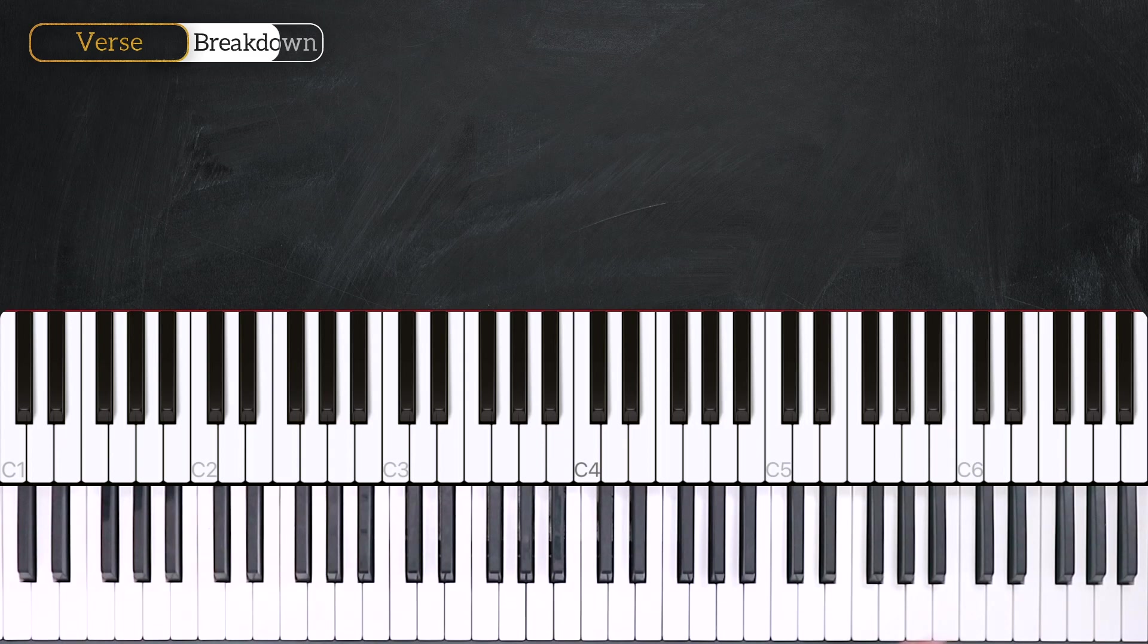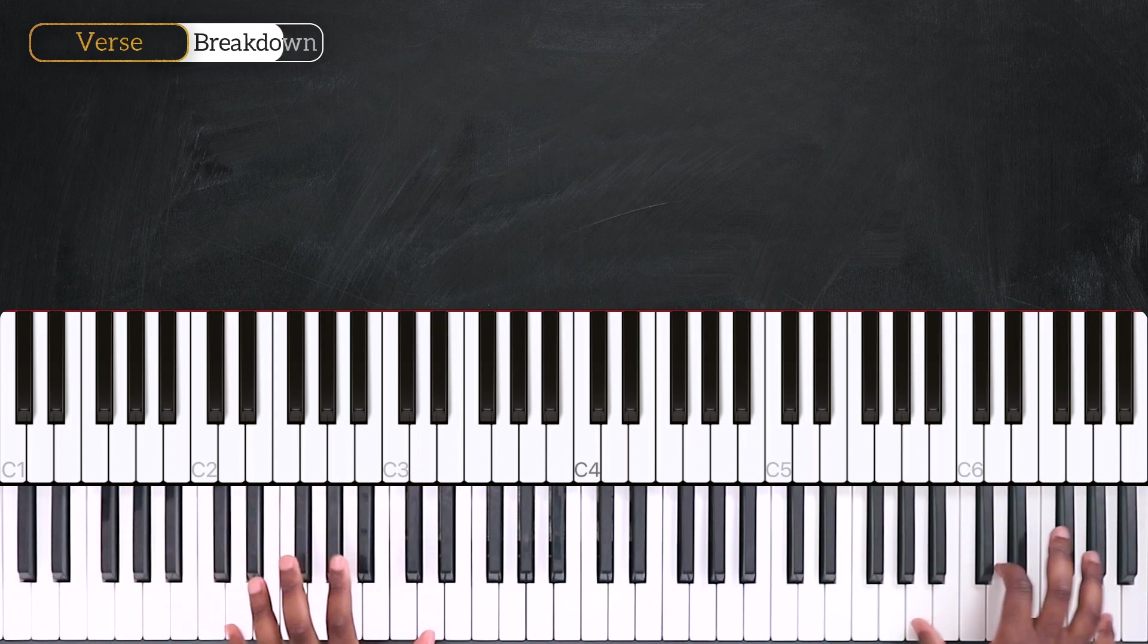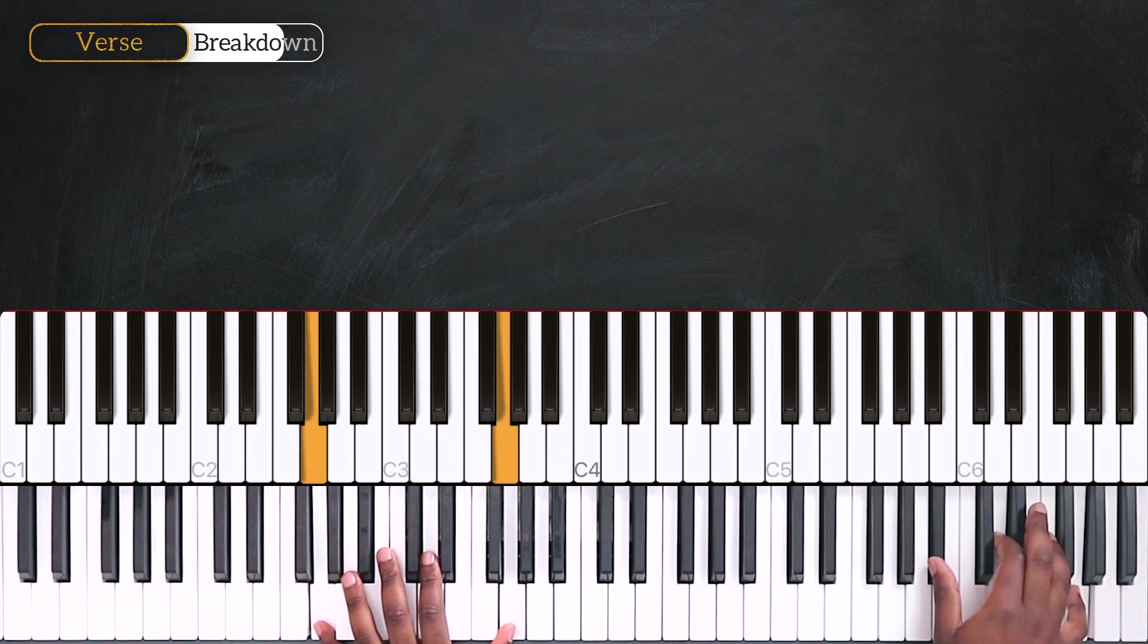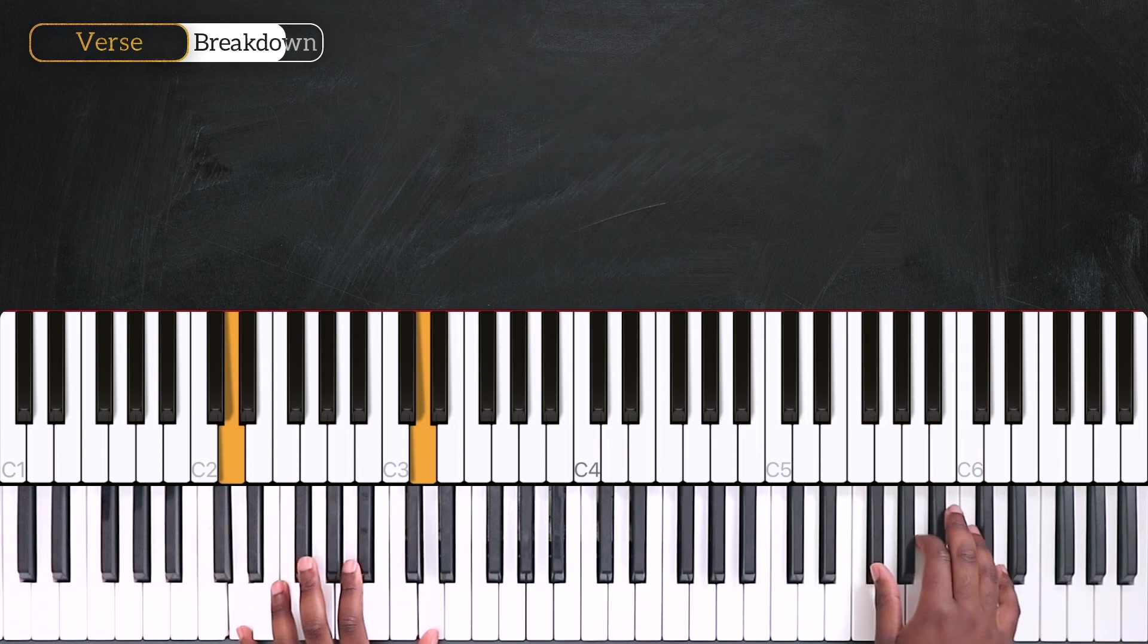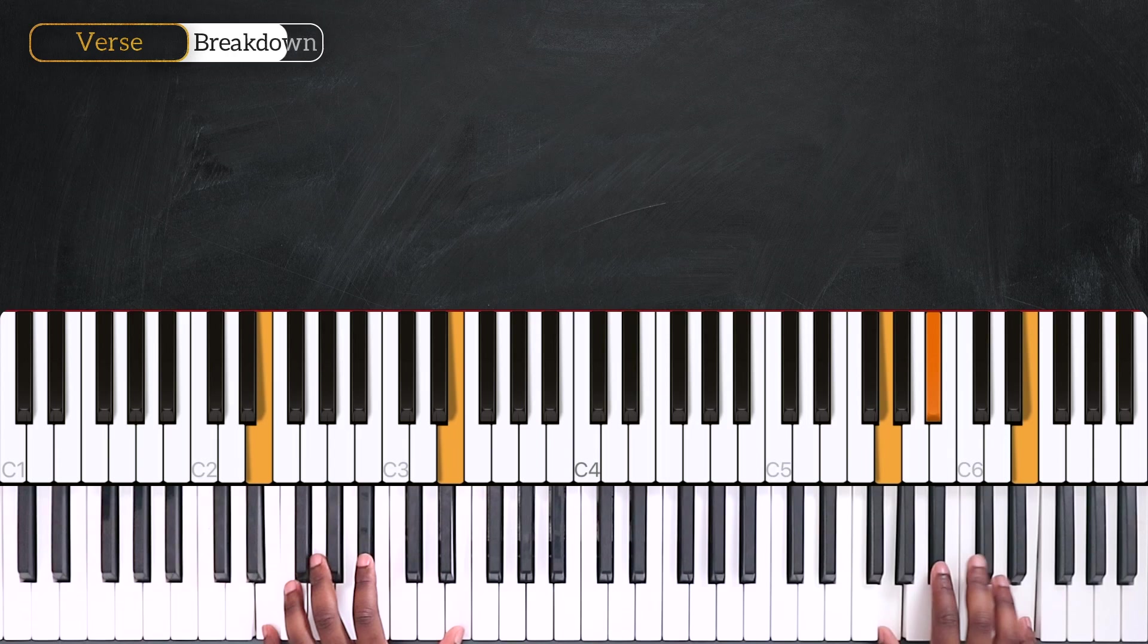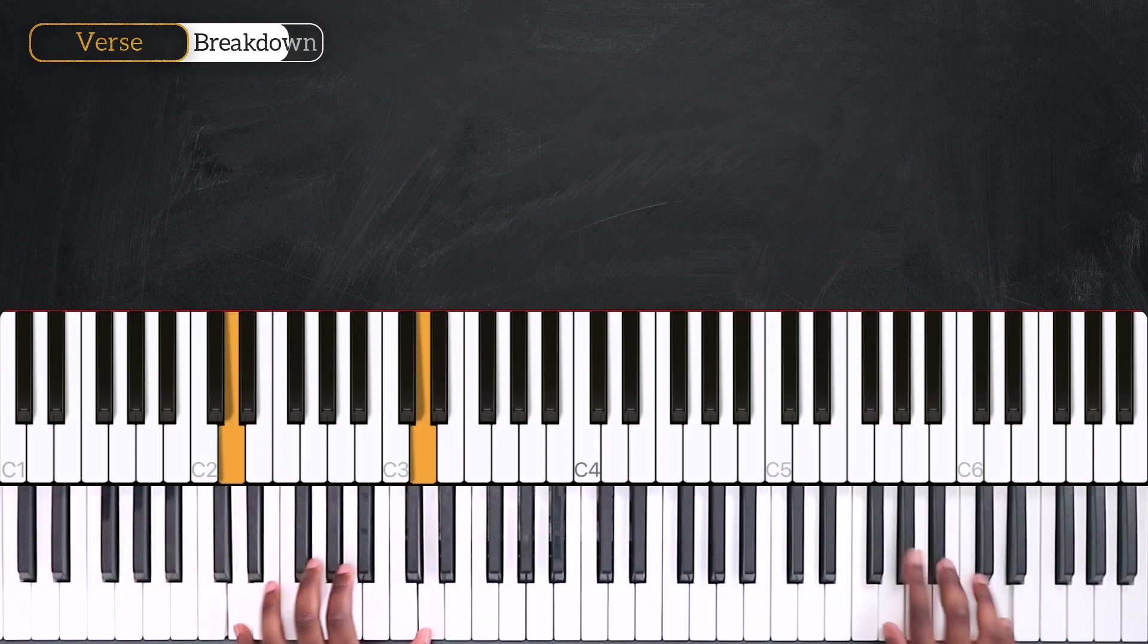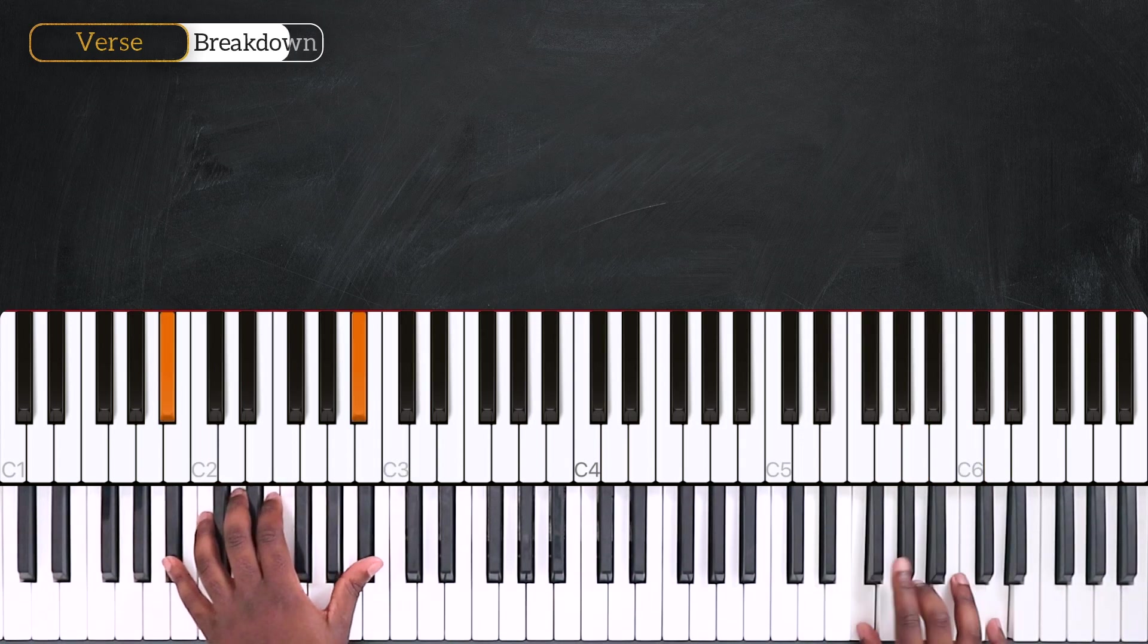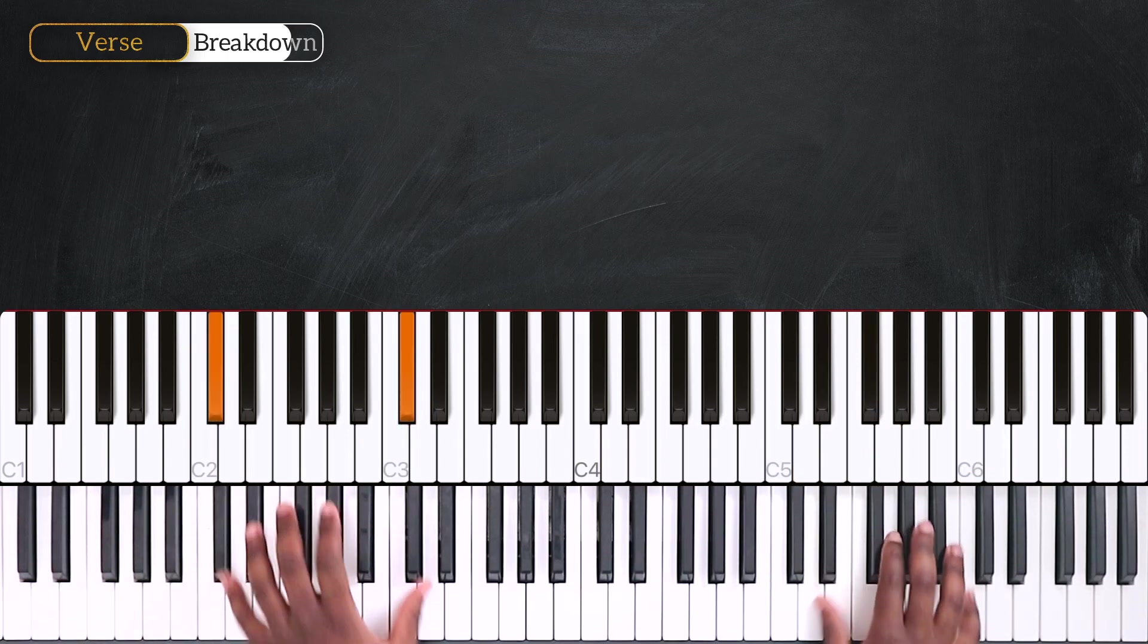Once again, here's the verse. Two, three, four. E diminished, Eb, G minor over D, C minor, Bb major seventh, A half diminished, D seventh, C minor, D7.